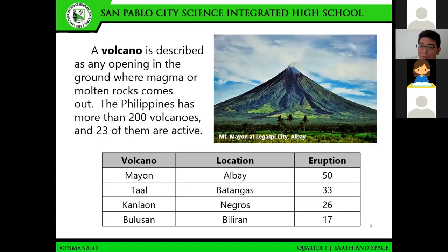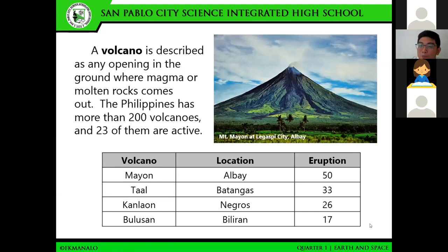In relation to those landforms, we mentioned a volcano. A volcano is described as an opening in the ground where magma or molten rocks come out. There are active volcanoes and inactive volcanoes. Frances, please differentiate these two terms. Active volcanoes are those with a history of recorded eruption, while inactive volcanoes have no such history. In our country, we have more than 200 volcanoes, and 23 of them are considered active.